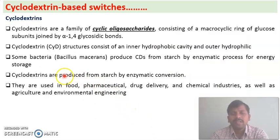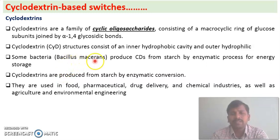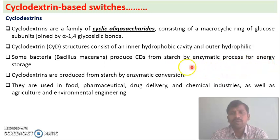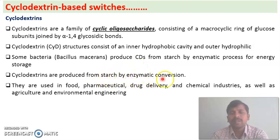Cyclodextrins are naturally produced by some bacteria. For example, Bacillus macerans produces cyclodextrins for energy storage through an enzymatic process — that is natural cyclodextrins. Artificial or synthetic cyclodextrins are produced from starch by an enzymatic conversion.